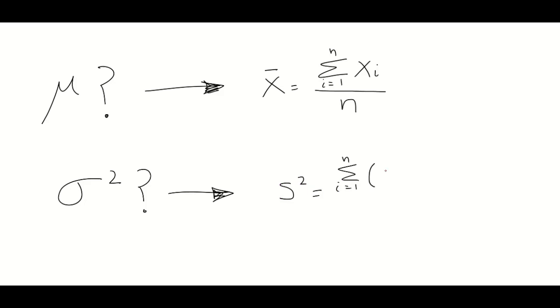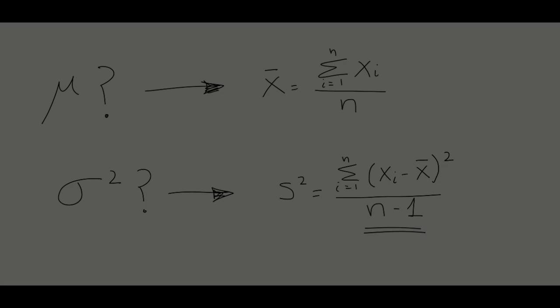But if you want to estimate the population variance from the sample variance, you have n minus 1 independent points. That is, you have n minus 1 degrees of freedom. Degrees of freedom is a concept we will revise several times during this module.